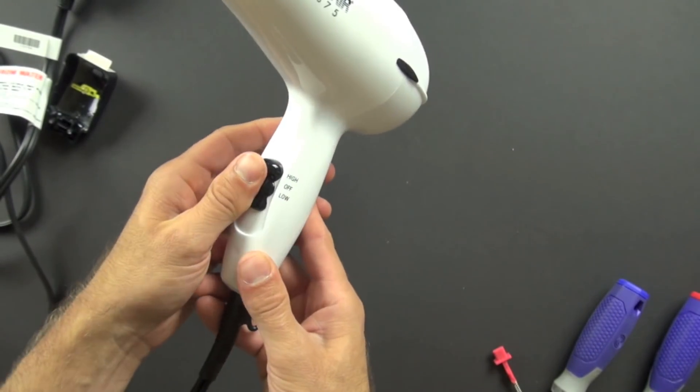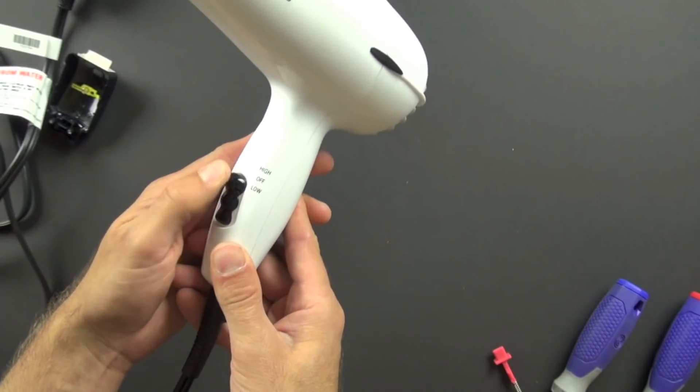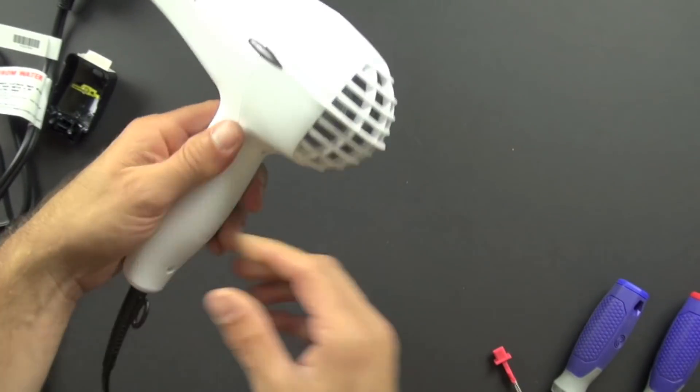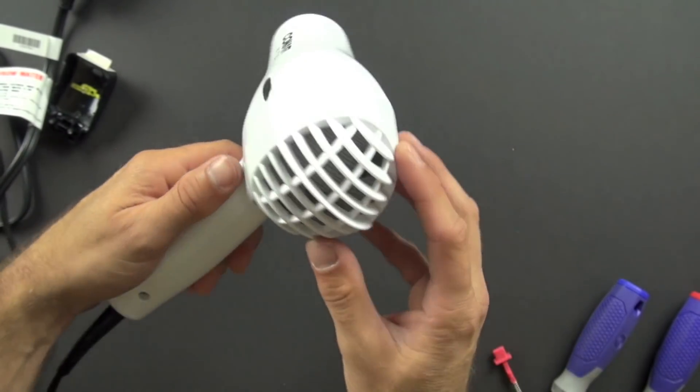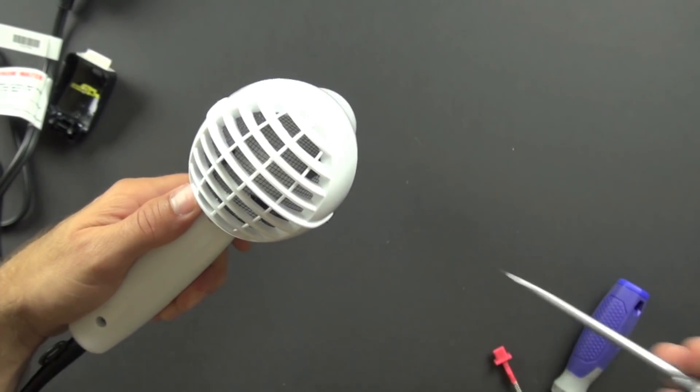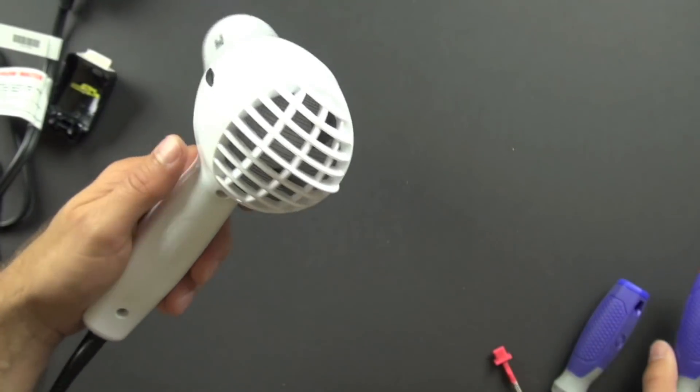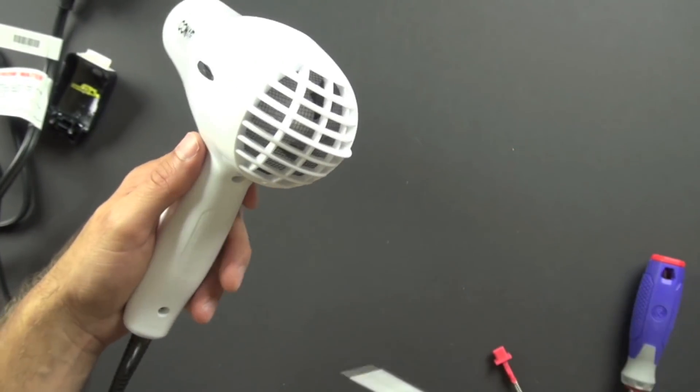And then we have our switch, so this allows us to turn the power high, low, and off. We have these little molded patterns here, and then our funnel that funnels the air through. You can see there's a screen on the back, and that helps to keep things out, so let's take a look at what's inside.